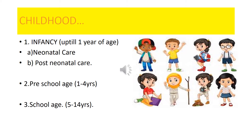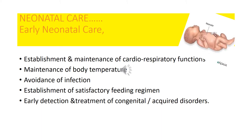Number one is infancy, which is up to one year of age. It is further divided into two parts: the early neonatal period, which is the first 28 days of life, and the post-neonatal period, which is 28 days to one year of age. Number two is preschool age, between one to four years. Number three is school age, between 5 to 14 years.